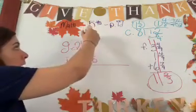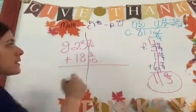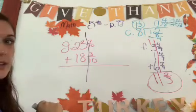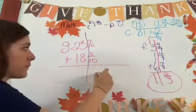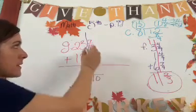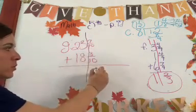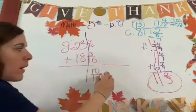You put your line to separate your whole numbers and your fractions and let's add our fractions together. 10 goes on the bottom and 7 plus 3 is 10. Ooh, interesting. That one's going to be easy, guys.